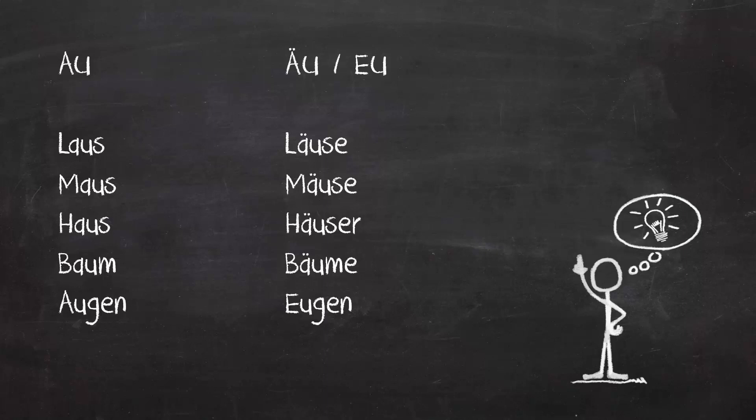That's it! Now you know how to spell and pronounce the German diphthongs AU and OI.